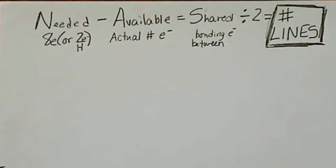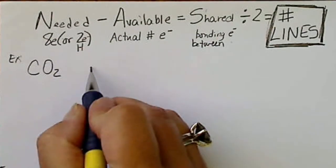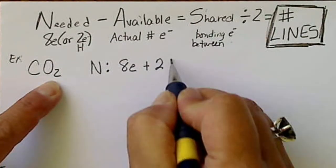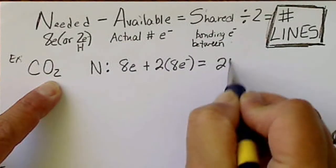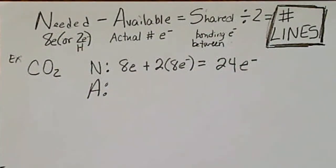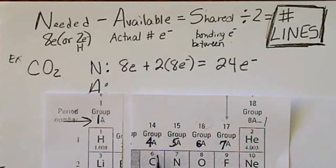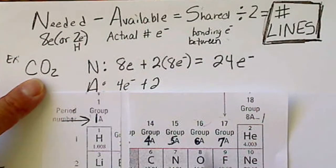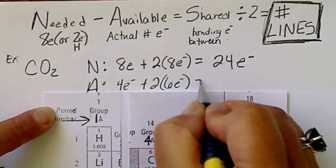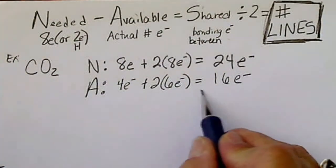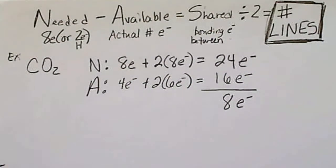Let's do carbon dioxide, CO₂. For the needed: carbon needs eight electrons plus two times eight electrons for the two oxygens, giving a total of 24 electrons. For the available: carbon is in group four so it has four electrons, plus two oxygens each with six valence electrons, giving 16 electrons total.